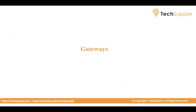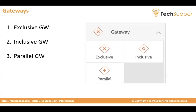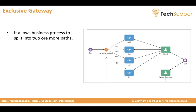Now let's look at gateways. There are three gateways in Oracle Process Automation: exclusive gateway, inclusive gateway, and parallel. Gateways decide where the request will flow after a user takes action. The exclusive gateway works like if-else: if a condition evaluates to true, take that path; if false, check the next condition. It allows a business process to split into two or more paths, but only one path is executed at a time based on the condition.